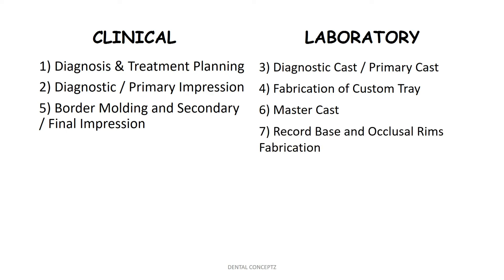Over this master cast we make the record base and occlusal rims, and these occlusal rims are used for recording the jaw relations. There are three types of jaw relations: orientation jaw relation, vertical jaw relation, and horizontal jaw relation. When we use a mean value articulator, we do not record the orientation jaw relation because mean value articulators do not accept face-bow transfers. In such cases we record only the vertical and horizontal jaw relations.